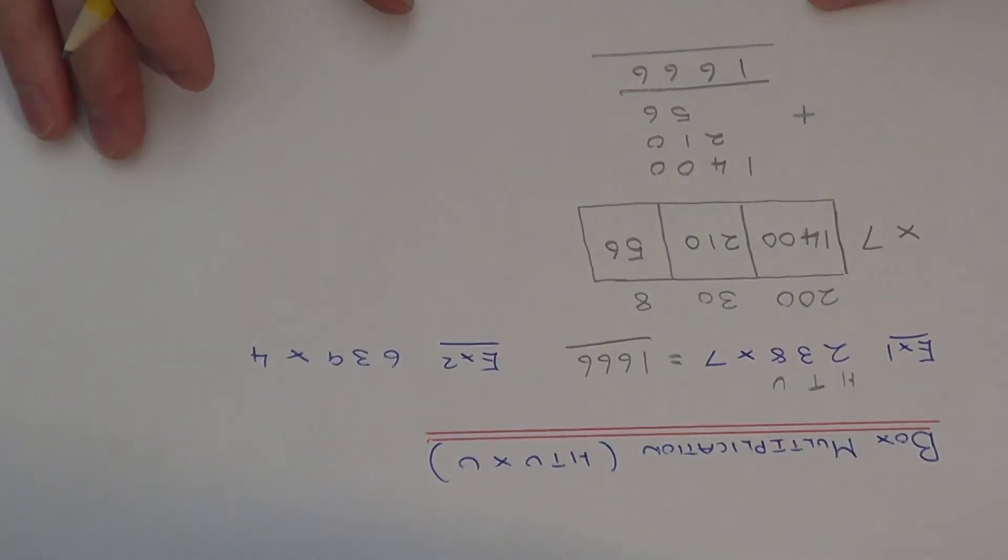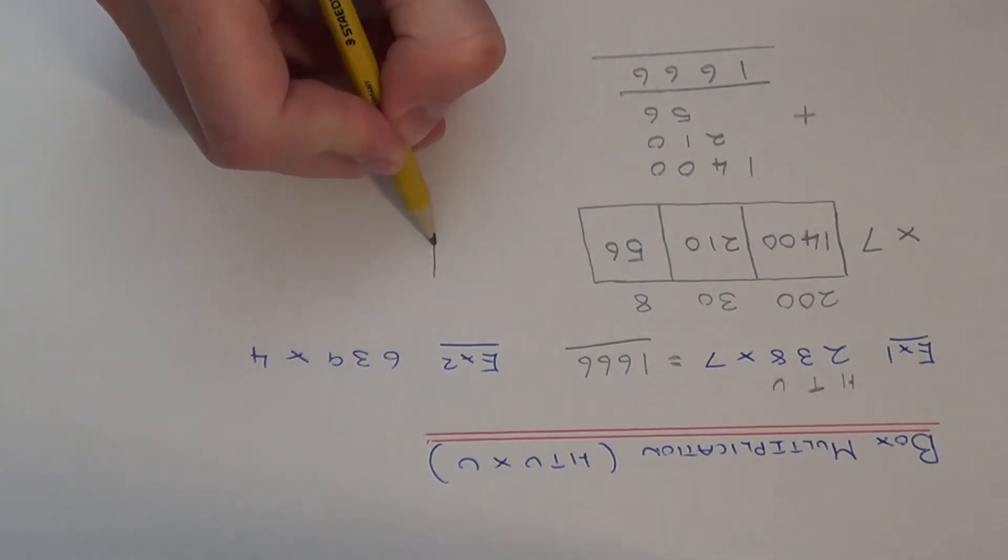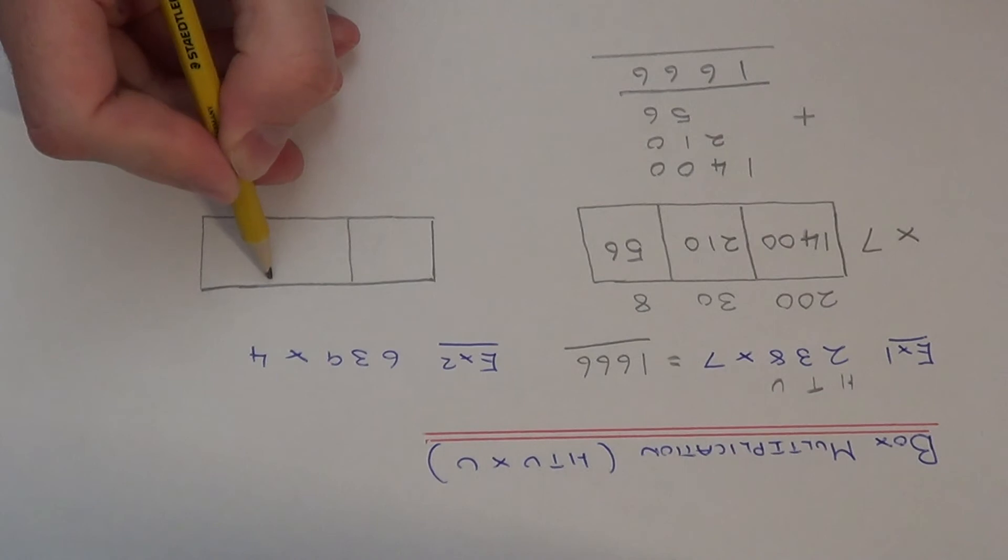Let's look at example 2 then. We've got 639 times 4. Again, it's a three digit number, so we need a rectangle with three spaces, three boxes.